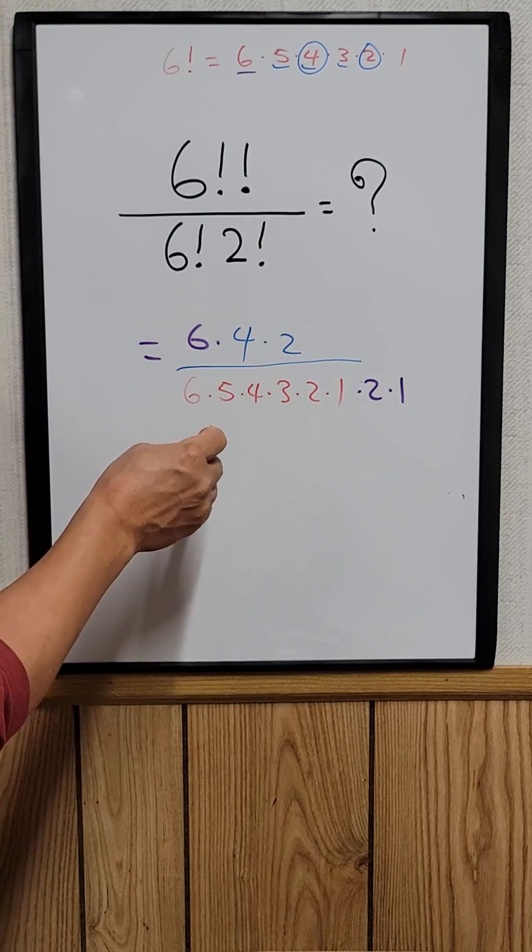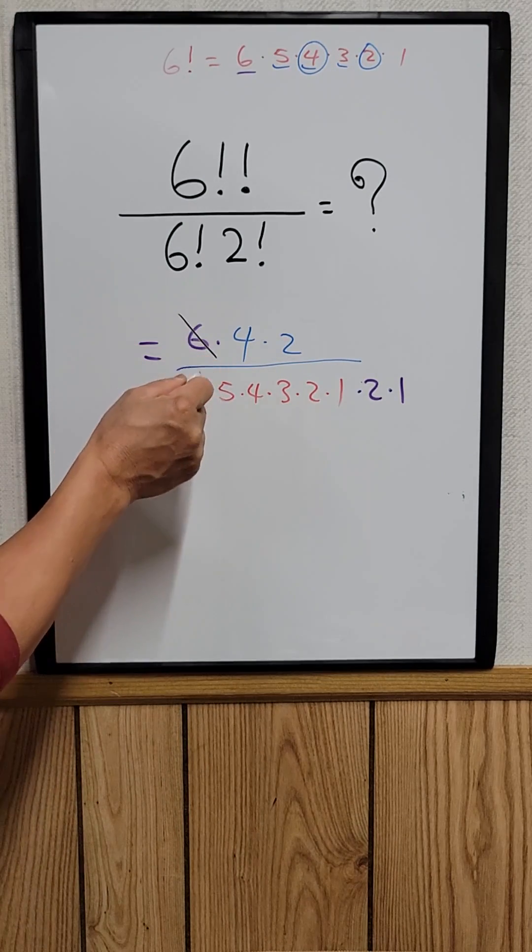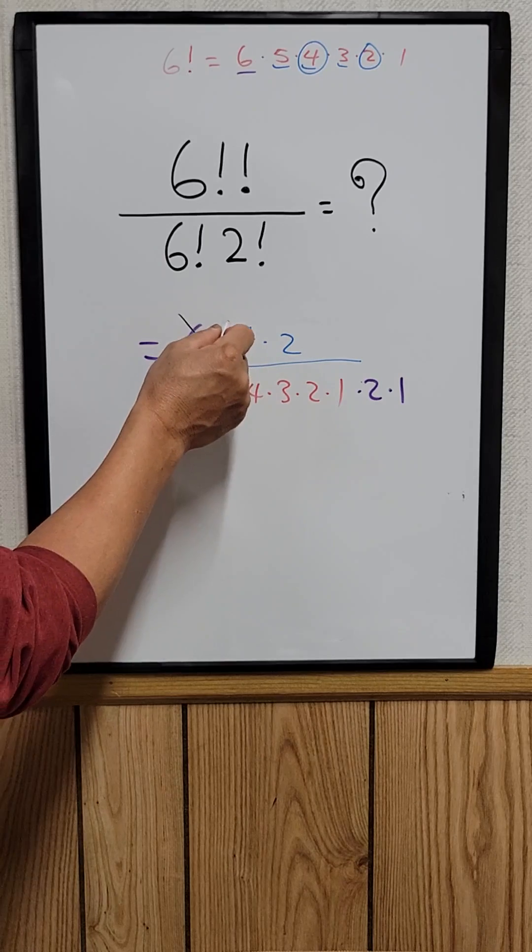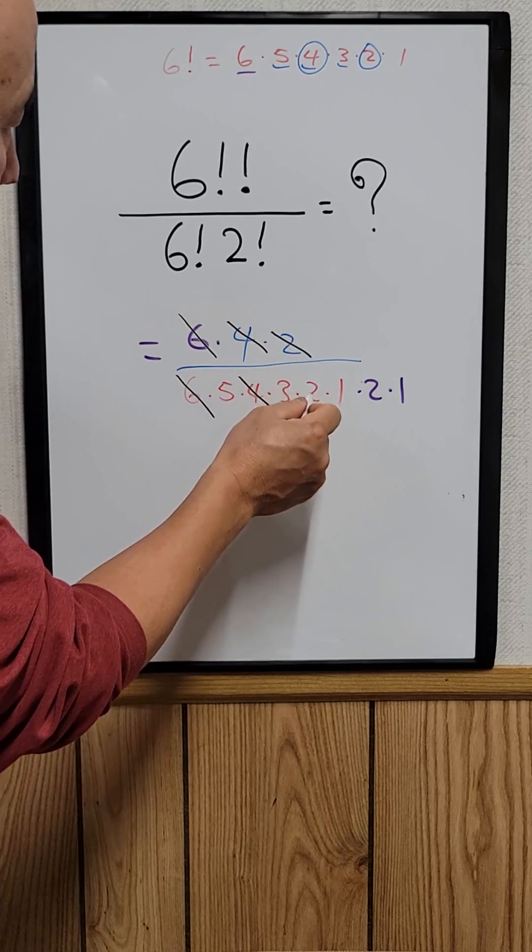Now you can cancel some of this out. So six right here, cancel that out. Four, cancel that out. Two, cancel that out.